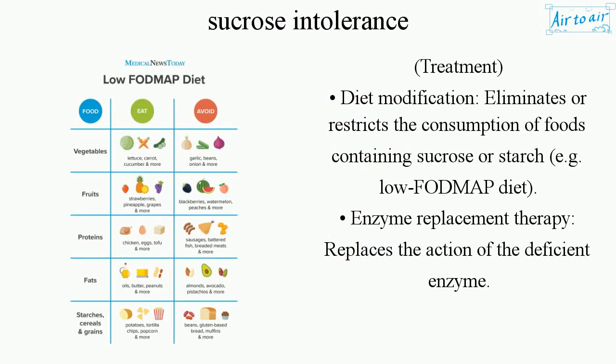Treatment includes diet modification, which eliminates or restricts the consumption of foods containing sucrose or starch — for example, a low FODMAP diet — and enzyme replacement therapy, which replaces the action of the deficient enzyme.